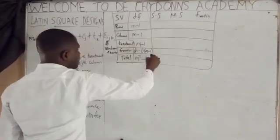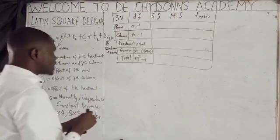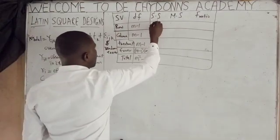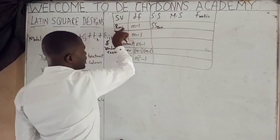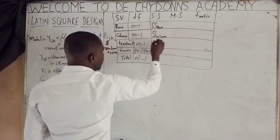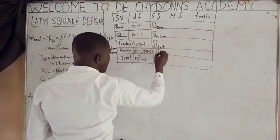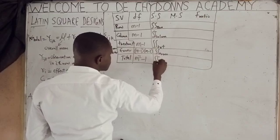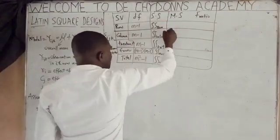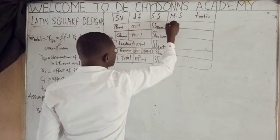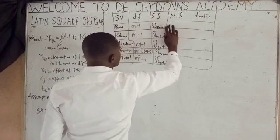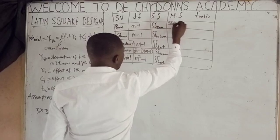For sum of squares, we have SS row, SS column, SS treatment, and SS error. For mean squares (MS), MS row = SS row / (M−1), and MS column = SS column / (M−1).